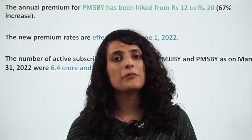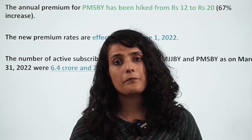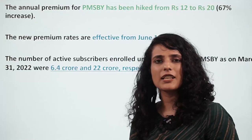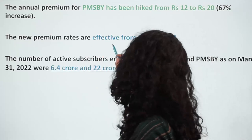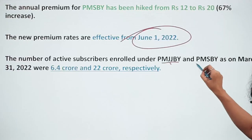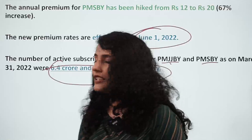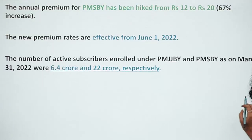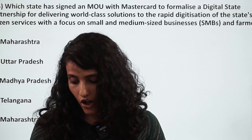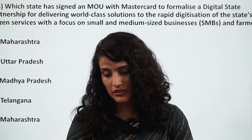Those between 18 to 50 years of age can apply for Atal Pension Yojana, and the age limit for paying the premium is 60 years. New premium rates are effective from June 1, 2022. Number of active subscribers under JJBY and PMSBY were 6.4 crores and 22 crores respectively. Jeevan Jyoti Bima Yojana ka insurance cover is rupees 2 lakh.